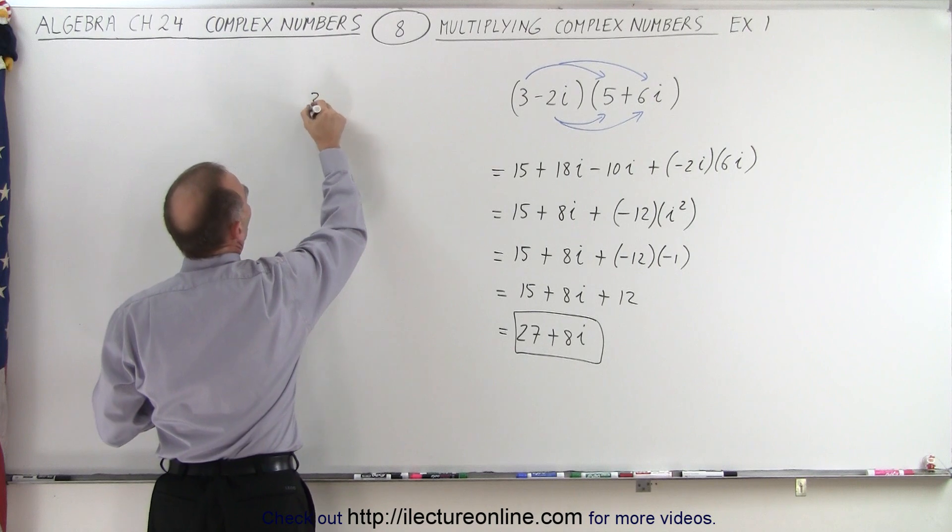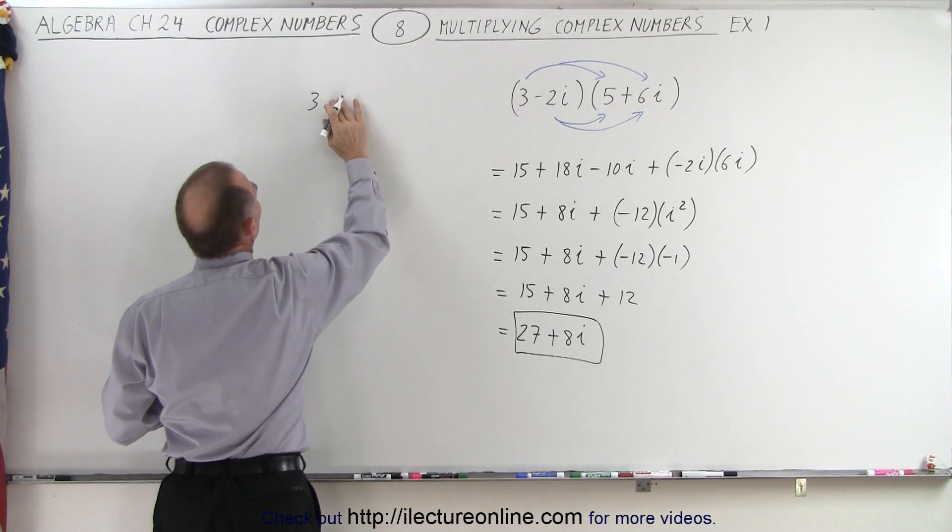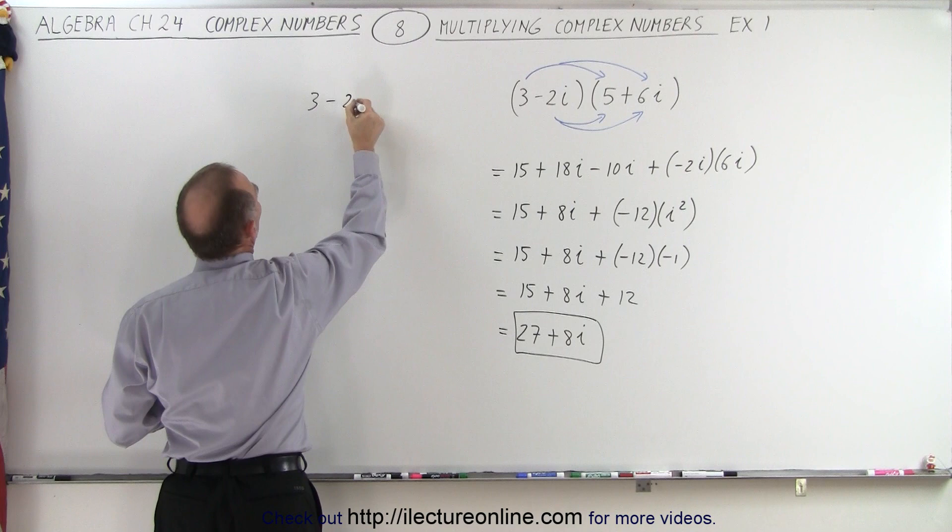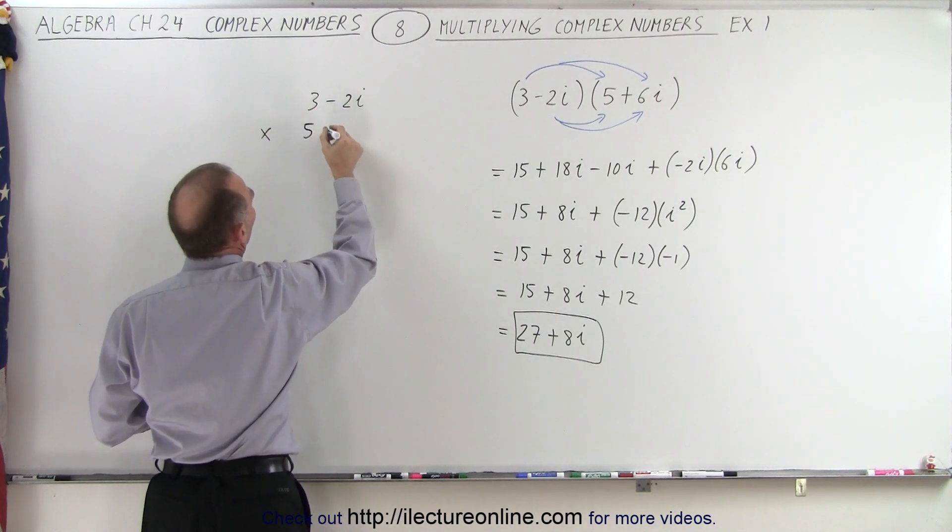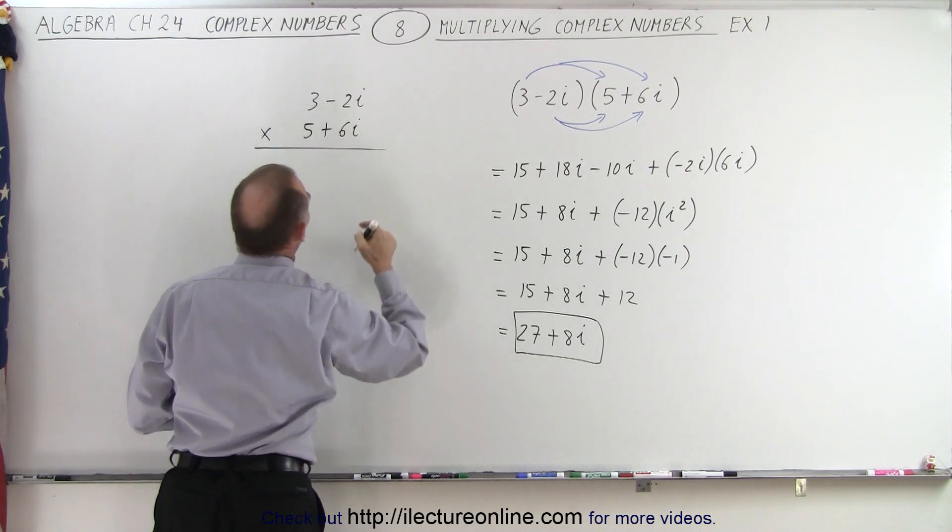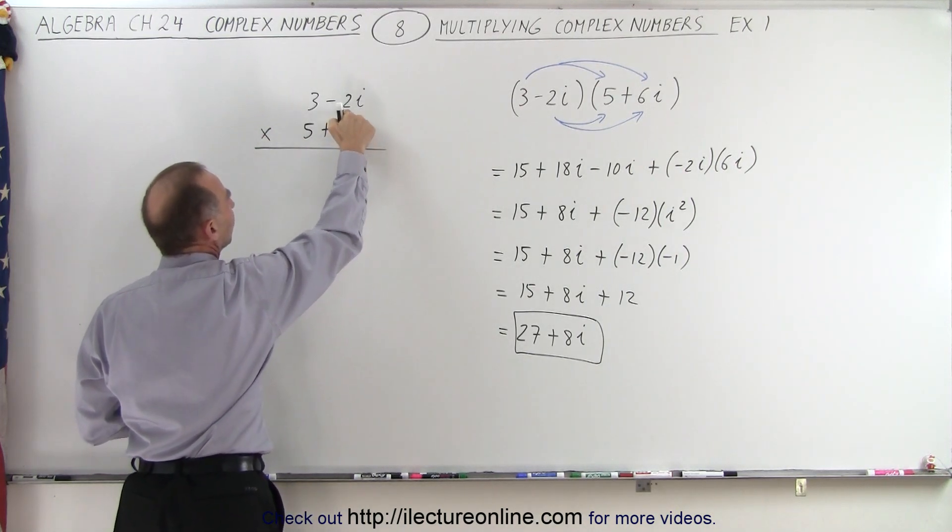So let's write it as 3, not plus, but minus 2i, minus 2i. And we're going to multiply that times 5 plus 6i, like this. So we take this term times this term.